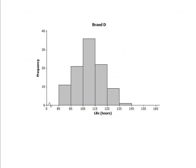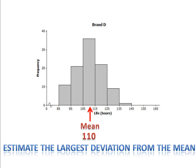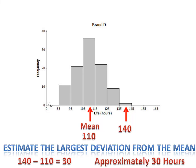Now let's take a look at a couple of histograms. We have two new brands of batteries, brand D and brand E. We've conducted the same experiment and recorded the data in a histogram. The x-axis is in intervals of 10, and the height of each bar is the frequency. First, we want to estimate the mean — the balancing point — which is approximately 110 hours for brand D. The largest value is at about 140, so subtracting 140 minus 110, the largest deviation from the mean is approximately 30 hours.